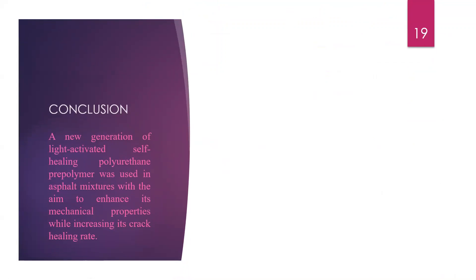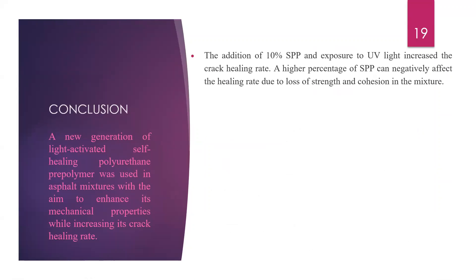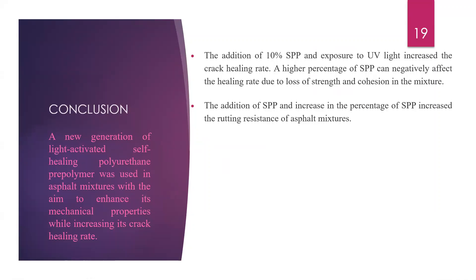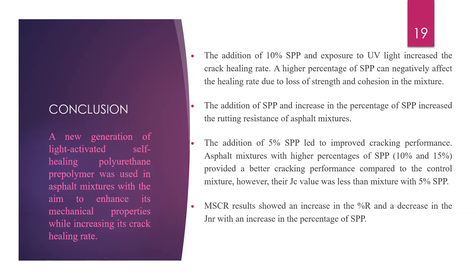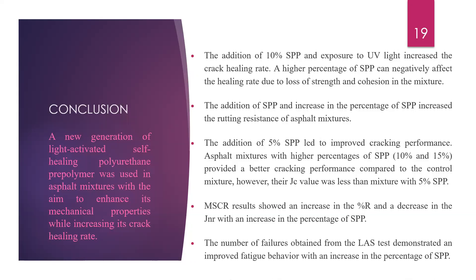In conclusion, we were able to successfully produce this material in our lab and prepare the modified asphalt binder. We saw improvement in self-healing when we added 10% self-healing polymer and exposed samples to UV exposure. Higher than that, we saw loss of strength and cohesion between aggregate and binder. We saw improvement in cracking with 5% self-healing polymer, and improvement in rutting resistance with increasing self-healing polymer content, showing increased stiffness. We also observed increased percentage recovery, decreased JNR, and improved fatigue behavior from the LAS results.